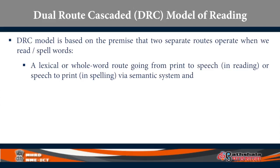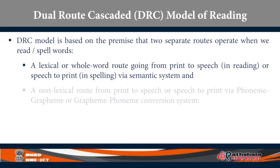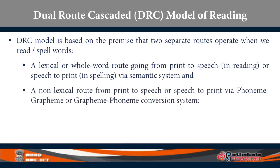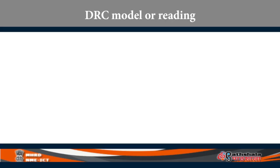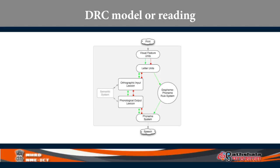The lexical whole-word route goes from print to speech in reading and speech to print in spelling, and it goes directly to the semantic system. Whereas the non-lexical route makes use of conversion from phoneme to grapheme or grapheme to phoneme depending on the task. Look at the picture of DRC model on the screen. The topmost layer starts with print — the eyes pick up the visual features of letters. There are letter units which make us identify the grapheme. If you go right, you go into the GPC route, that is the grapheme-phoneme conversion route. So you identify the grapheme, think about the phoneme, convert them, go into the phoneme system, and produce the speech.